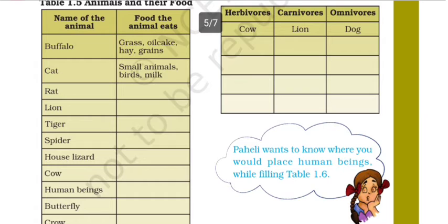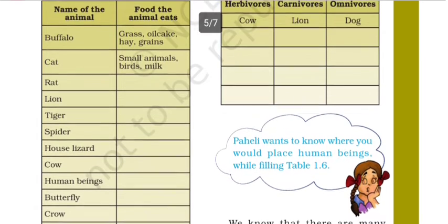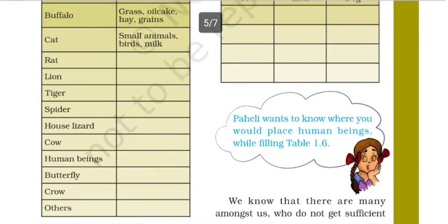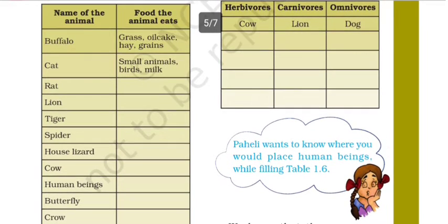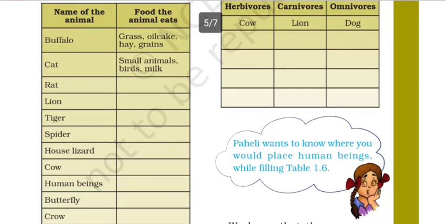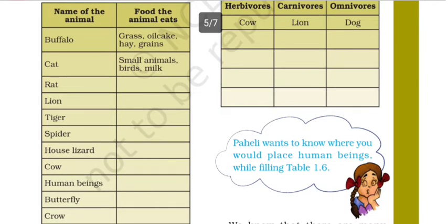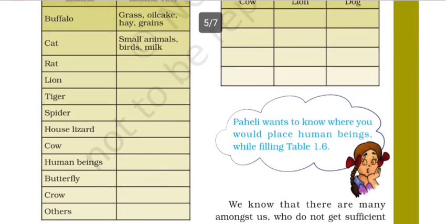We have a list of animals, so you have to make this table in your copy. In the column provided — food the animal eats — you have to write what each of the following animals eats: rat, lion, tiger, spider, house lizard, cow, human beings, butterfly, and crow.